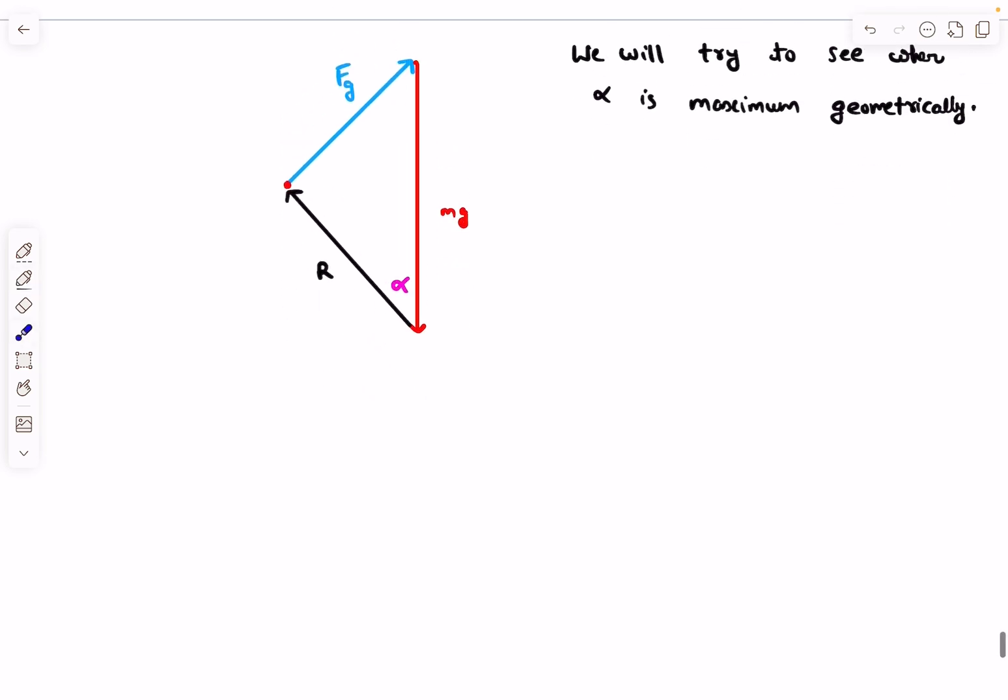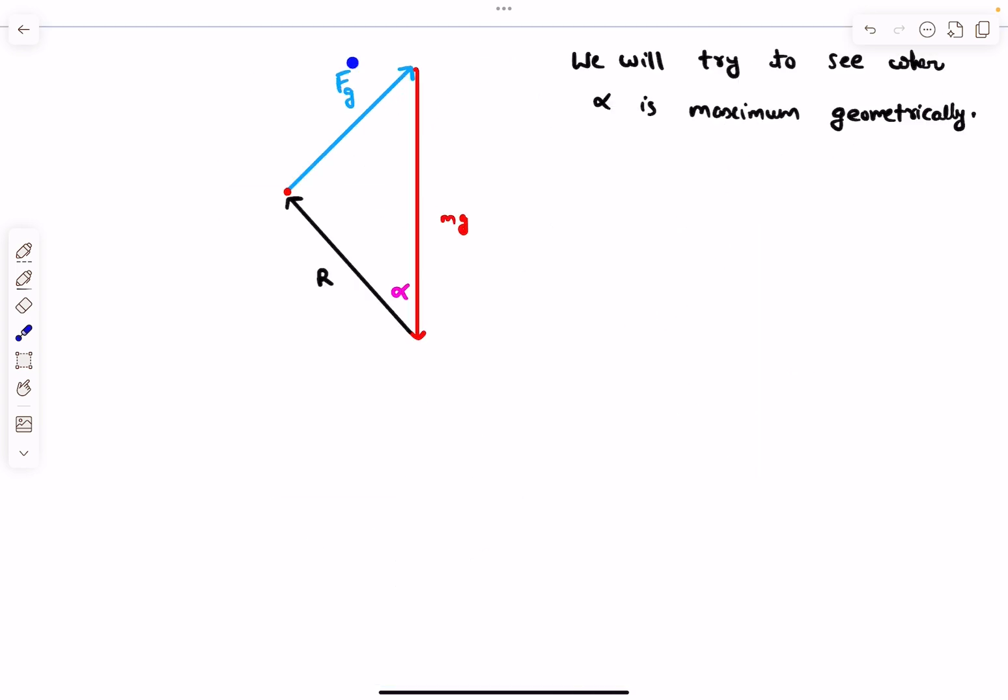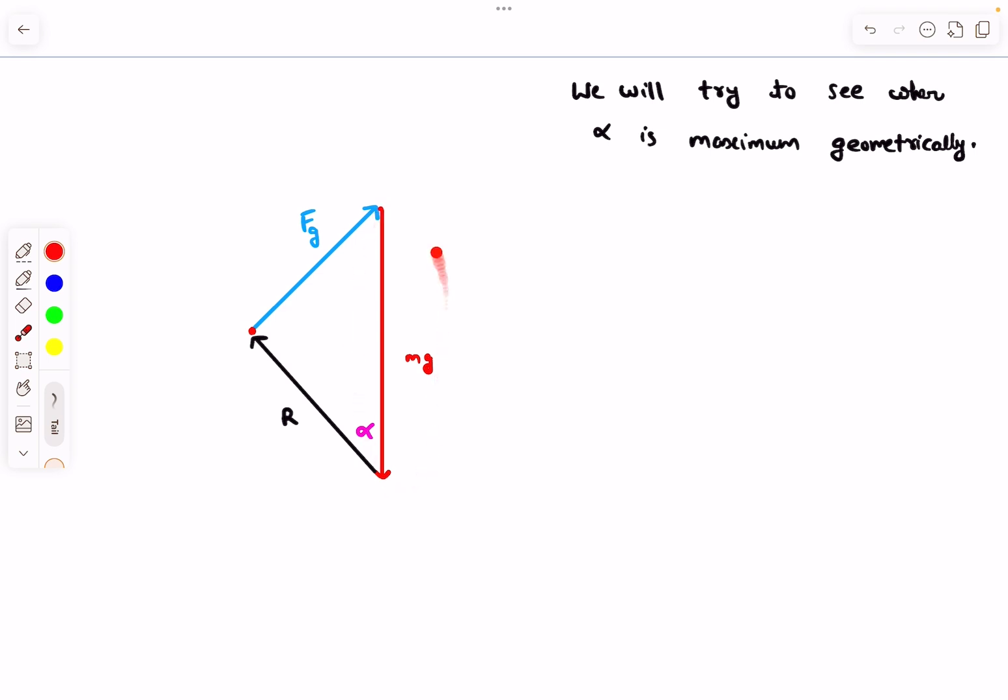Let's study the vectors first. Fg vector can change direction because it's the gravitational attraction between M and the cube. As mass M moves along the circle, Fg vector will rotate and point in different directions. One thing is obvious: Fg has constant magnitude. Mg vector is always constant in direction and magnitude, but Fg can vary in direction.